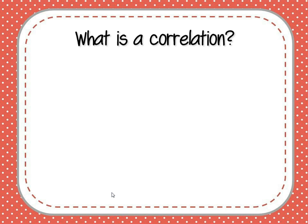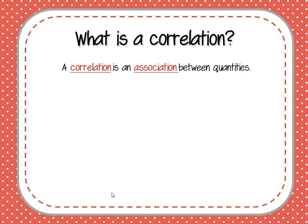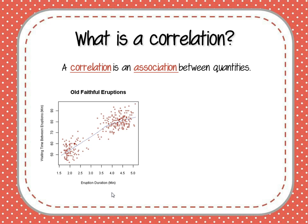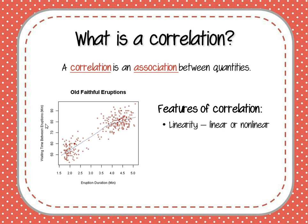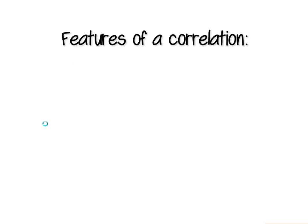The whole point of a scatterplot is to show those relationships, or what we'll call correlations. A correlation is an association or a relationship between quantities. On our Old Faithful scatterplot, there's a relationship or a correlation between how long an eruption lasts and how long you have to wait until the next one. Now a correlation can have some different features: a correlation can be either linear or non-linear, it can be either strong or weak, and it can be positive or negative.